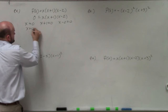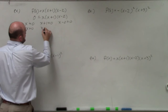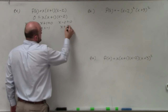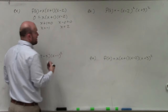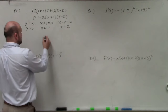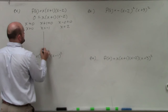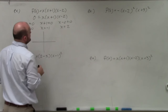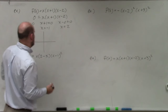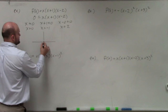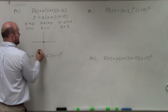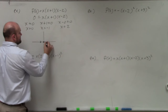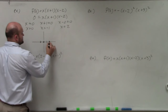So therefore, x equals 0, x equals negative 1, and x equals 2. To graph my polynomial, I'm going to identify what my zeros are: I have a zero at 0, a zero at negative 1, and a zero at positive 2.